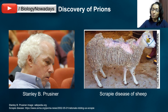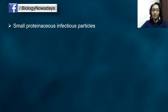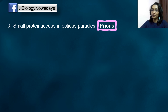Dr. Prusiner was expecting a virus to be the causative agent of Scrapie. But to his surprise, instead of a virus, he found small proteinaceous infectious particles. They were smaller than viruses. Since they were mainly proteins, he called them prions.